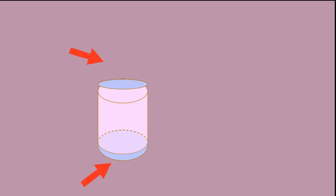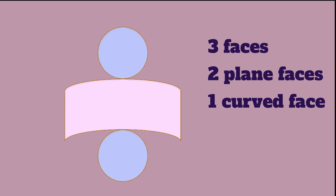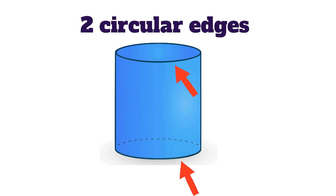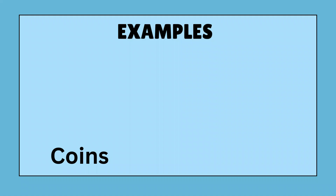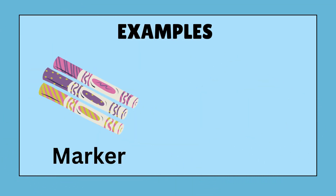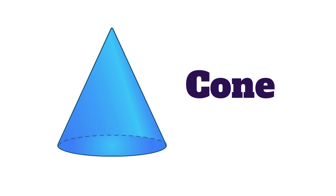Next one is cylinder. It has three faces — two plane faces and one curved face, as you can see in the picture. It has two edges, and both edges are circular. There is no corner or vertex in the cylinder. Some examples of cylinder are: coins, bottle, marker, roller, etc.